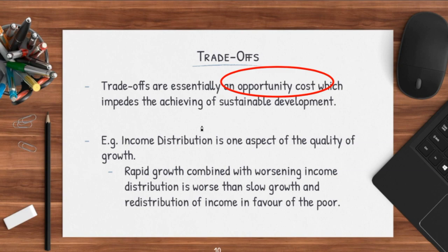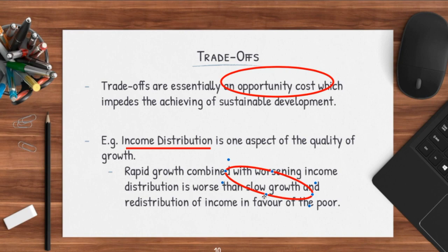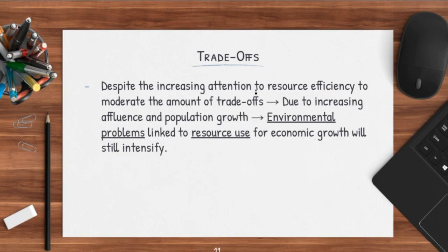We'll go through one example of a social trade-off: income distribution. This is one aspect of the quality of growth, whereby rapid growth combined with a worsening in income distribution is actually worse than slow growth but with the redistribution of income to the poor. When you want to pursue rapid growth, usually the incomes of the rich will get higher, but the incomes of the poor may not even increase. This will cause the income gap between the two groups to actually increase, resulting in income inequality — which is a huge trade-off — because in trying to aim for economic growth, you actually trade off your social aspect of life.